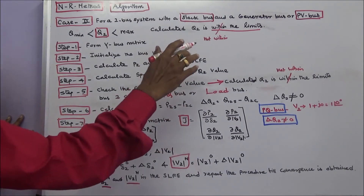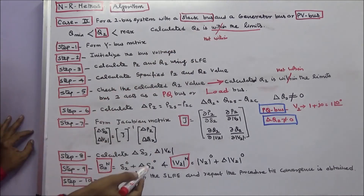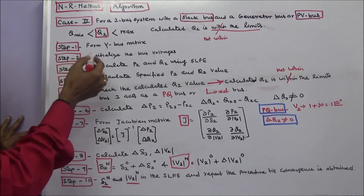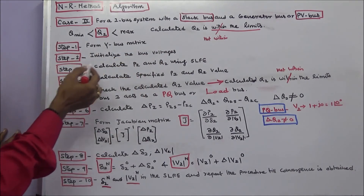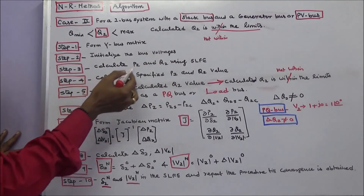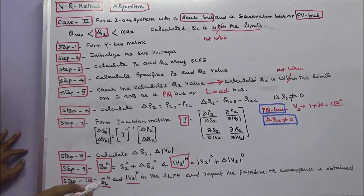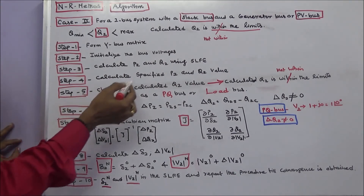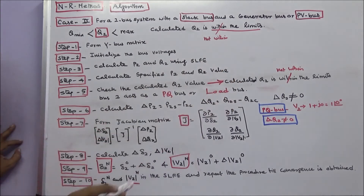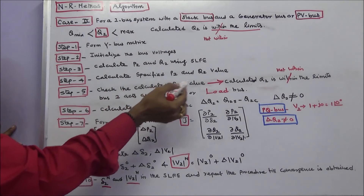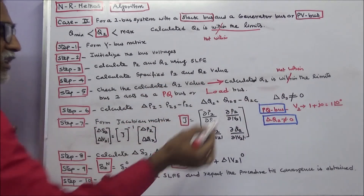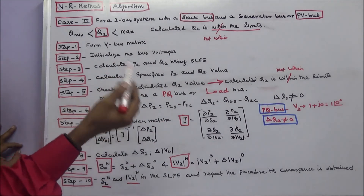Case 2B: if the calculated Q2 is not within the limits. Step 1: form the Y-bus matrix. Step 2: initialize the bus voltages. Step 3: calculate P2 and Q2 using the static load flow equations. Step 4: calculate the specified P2 and Q2 values. Step 5: check the calculated Q2 value. If calculated Q2 is not within the limits, bus 2 acts as a load bus or PQ bus. Assume V2 is equal to 1 + j0, or 1.0 per unit, and calculate P2 and Q2.